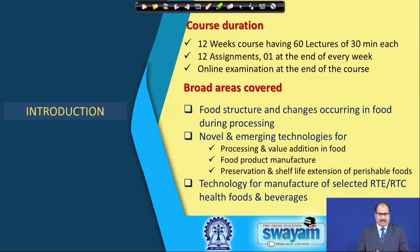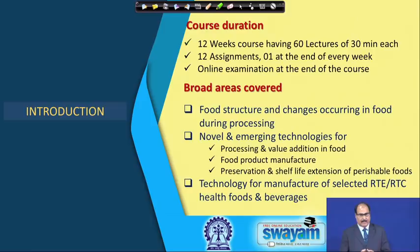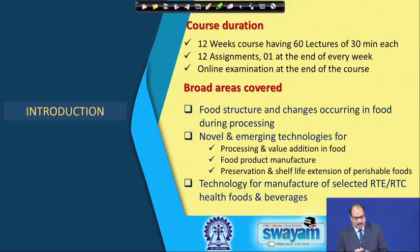The broad areas covered in this course include food structure and changes occurring in food during processing, novel and emerging technologies for processing and value addition of food, food products manufacture, preservation and shelf life extension of perishable foods. Towards the end of the course, we will discuss about some selected ready-to-eat, ready-to-cook health foods and beverages manufacturing technologies.